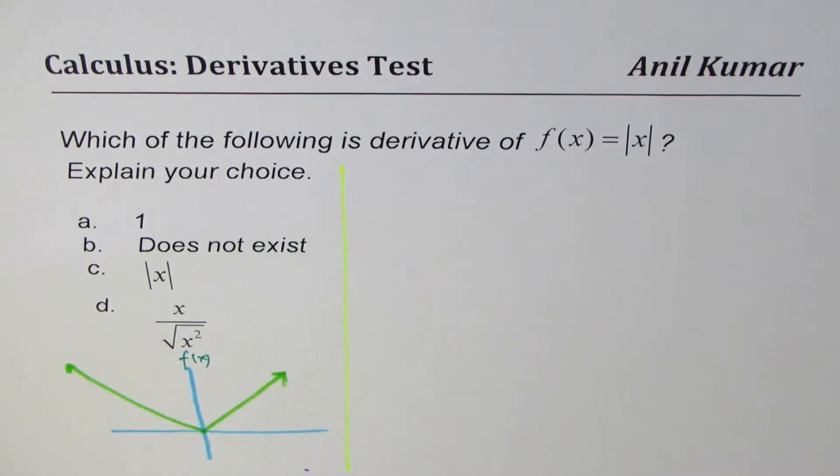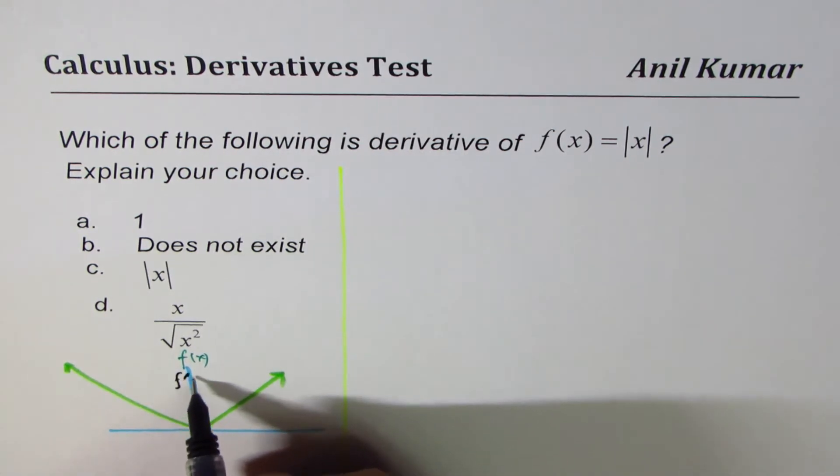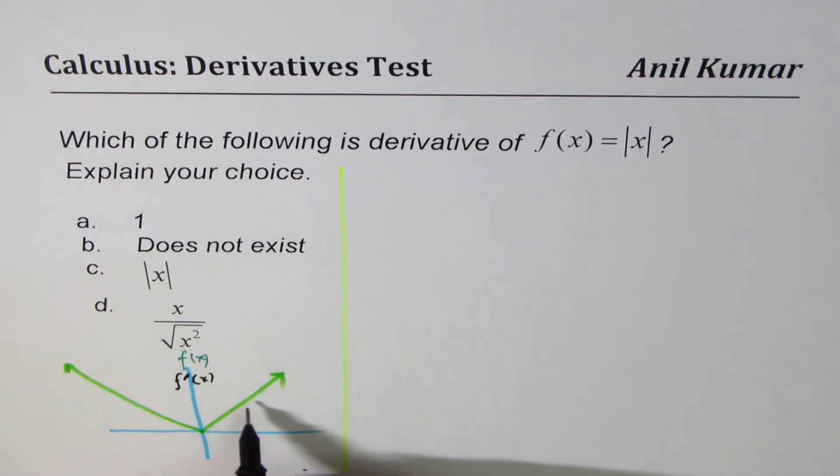Then, if I have to sketch the derivative of this function, then it is 1 here. I should say 0. 1 here. And here, the slope is negative 1. So, I could write this as negative 1 and 1. And it is undefined at origin. So, at this point, it does not exist.